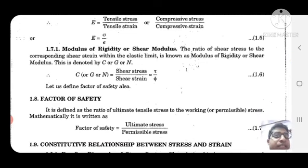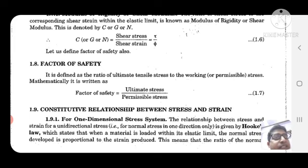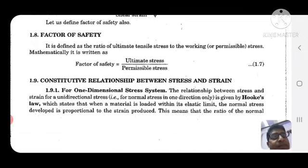Factor of safety is defined as the ratio of ultimate tensile stress to the working or permissible stress. Mathematically, it is written as: factor of safety equals ultimate stress divided by permissible stress.